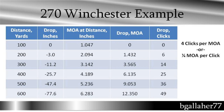On my scope it's 1 quarter minute of angle per click, or 4 clicks per minute of angle, however you want to think about it. So at 400 yards, the drop is 6 minutes plus a little bit, and 6 divided by 4 is 24. That little rounding gives you 25 clicks. When you're calculating clicks, you're going to have to round to the nearest whole number because you can't go half a click.